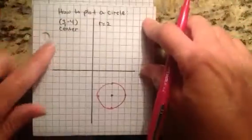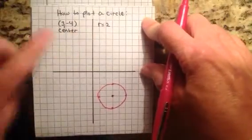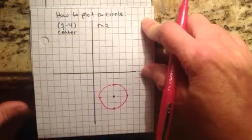So that is a circle centered at 3, negative 4, with a radius of 2. So that's if you're given this information, you know, nice and neatly like this.